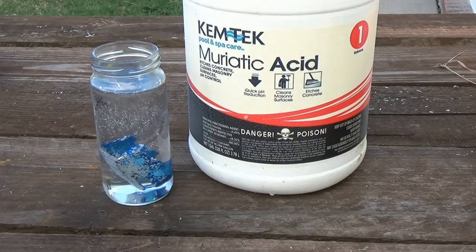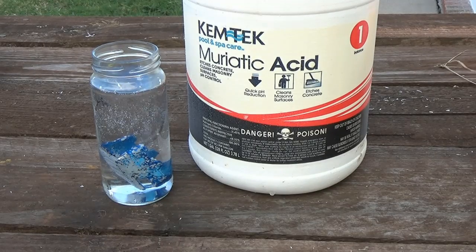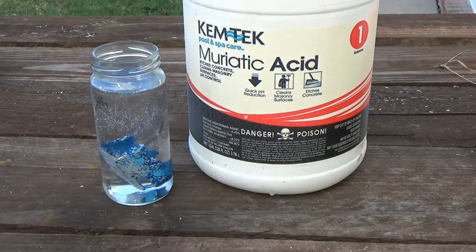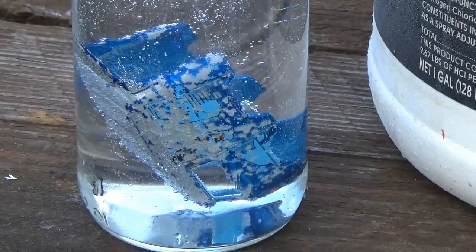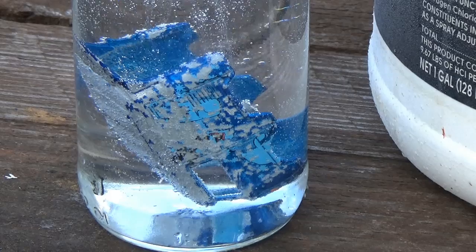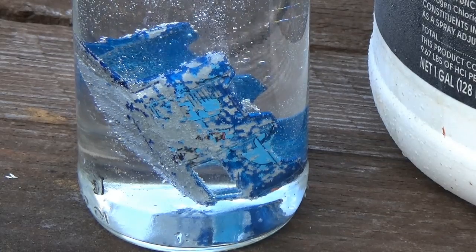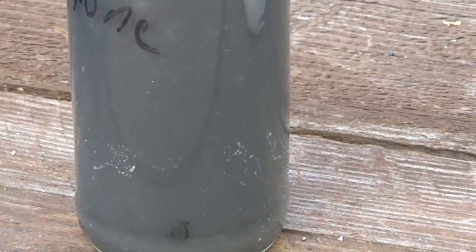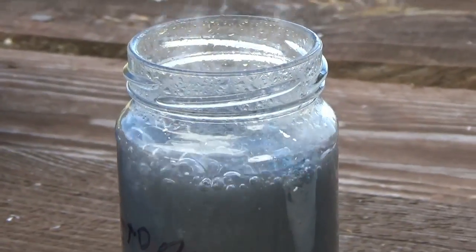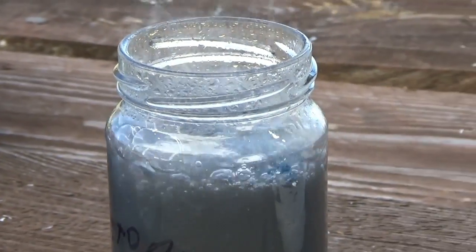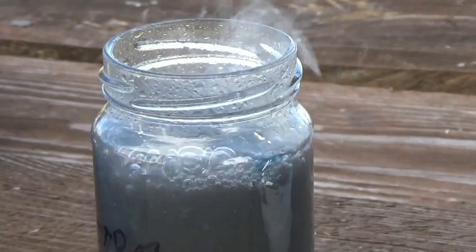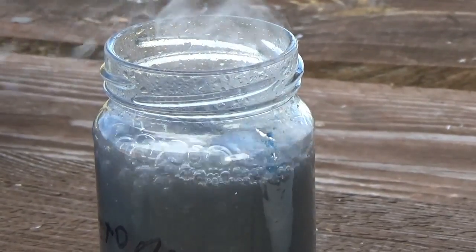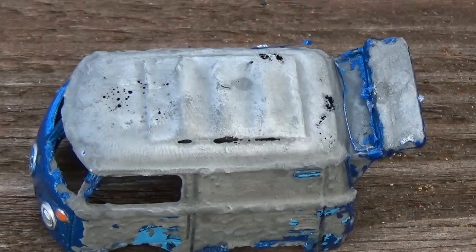After a few seconds, bubbles will start to form and then the reaction really takes off. I shouldn't have to say this, but do this outside for obvious reasons. Also keep a pitcher of water next to you to wash any acid that might get on your skin. And whatever you do, wear safety goggles to protect your eyes. If you want to keep things really safe, you can use vinegar, but you'll need to leave it in for about a week to get the same results muriatic acid will get in three minutes.